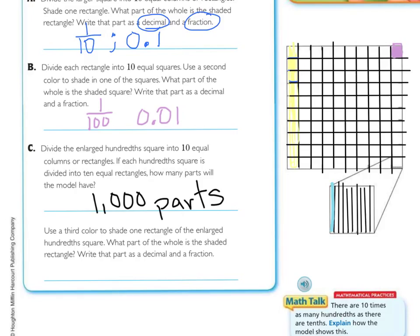I shaded mine blue right here. So, what part of the whole is the shaded fraction? And when it's talking about the whole, it's meaning this whole. So, it is one out of one thousand. And as a decimal, that would be zero decimal, no tenths, no hundredths, and one one-thousandth.